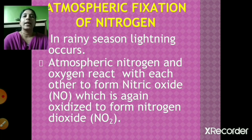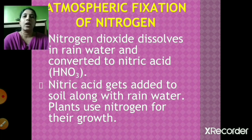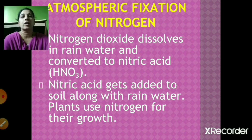This nitric oxide is again oxidized — it combines with oxygen — to form nitrogen dioxide, NO₂. Nitrogen dioxide then dissolves in rainwater and gets converted into nitric acid, HNO₃. This nitric acid gets added to the soil along with the rainwater, and then plants use this nitrogen for their growth.